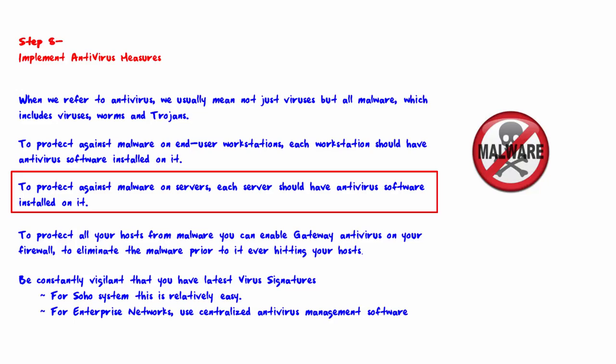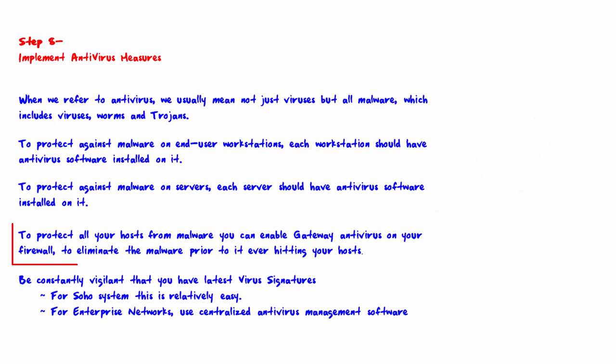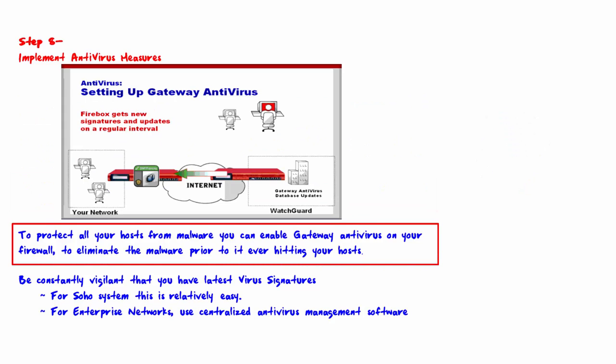The antivirus software installed on servers may be specific to that particular type of server, and is generally different than the antivirus software installed on end-user workstations. To protect all hosts from malware, you can enable gateway antivirus on your firewall to eliminate malware prior to it ever hitting your hosts.